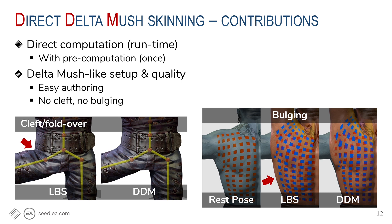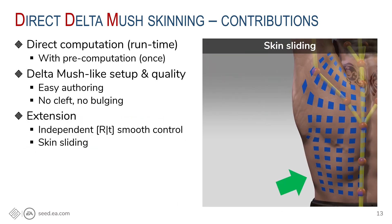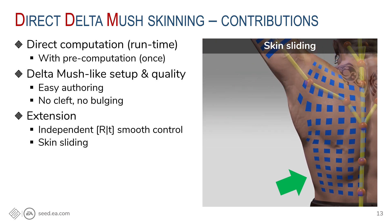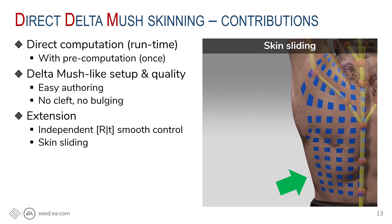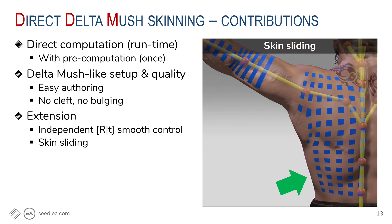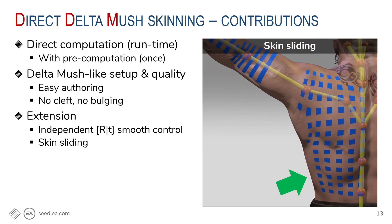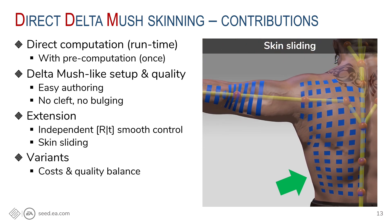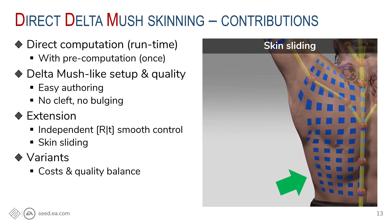With that inspiration, we rework the math and make a direct model that respects all the good of the original Delta Mush, which means high-quality deformation with no weight painting. We even extend the original model to improve the quality. Here we show the skin sliding effect produced by setting different smoothness amounts of rotation and translation. To our knowledge, it's the first direct model that can do skin sliding. And finally, we offer different variants to balance between computing, storage costs and deformation quality.